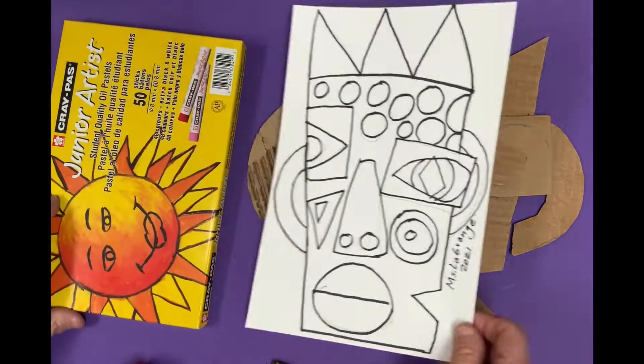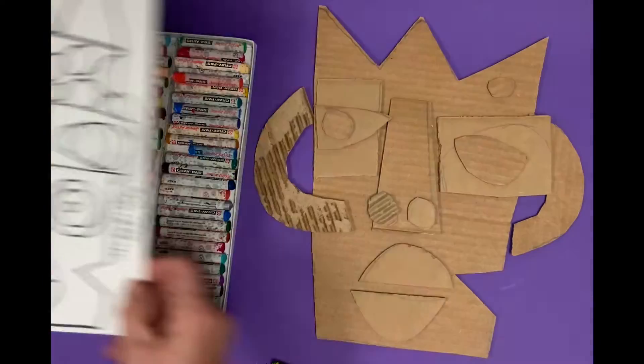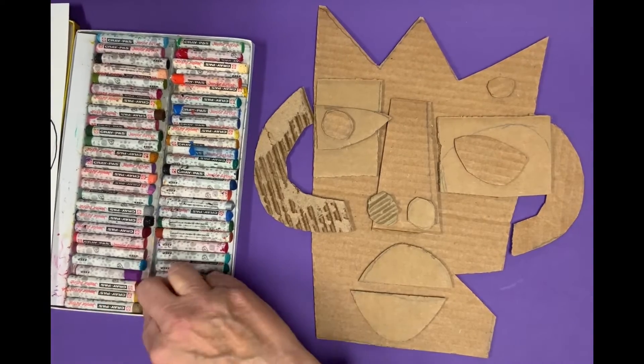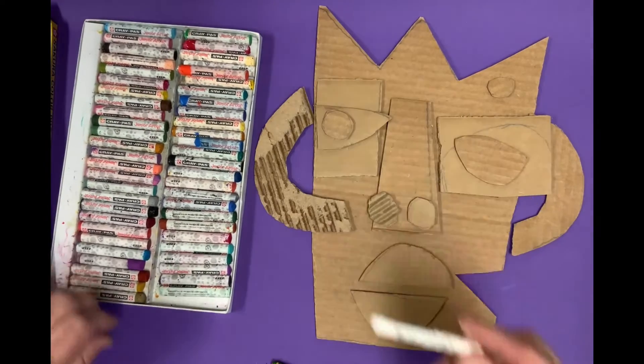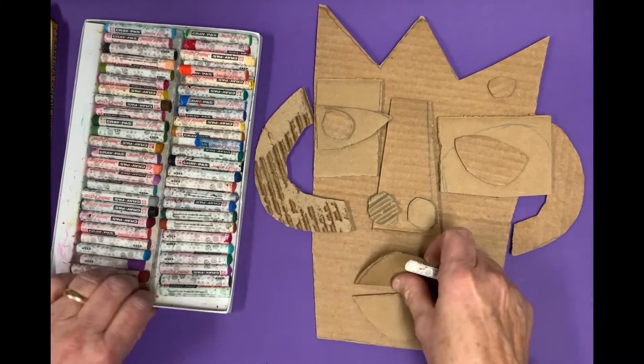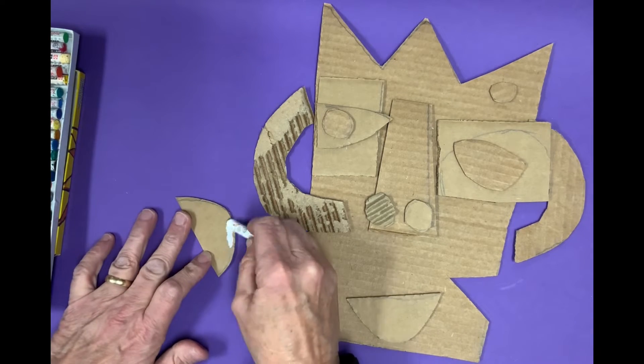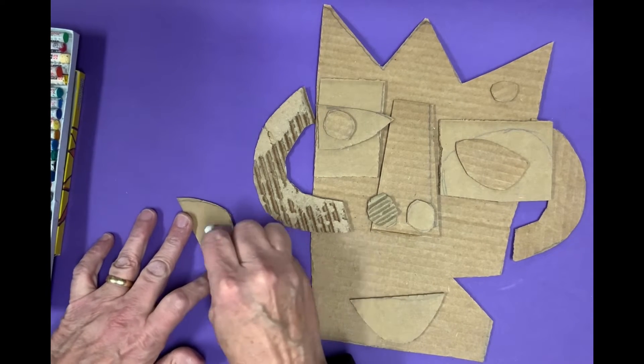Now that I have all my pieces cut out, I'm going to begin something called adding a tint to each of my pieces. Adding a tint is adding white first to a color, so I'm picking up my white oil pastel.